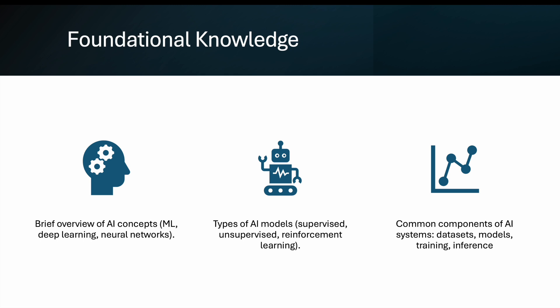Also, common components of an AI system — applicable to all AI products — include: the data set being used, the models used for training, and the interfaces. These are the common components across all AI products.